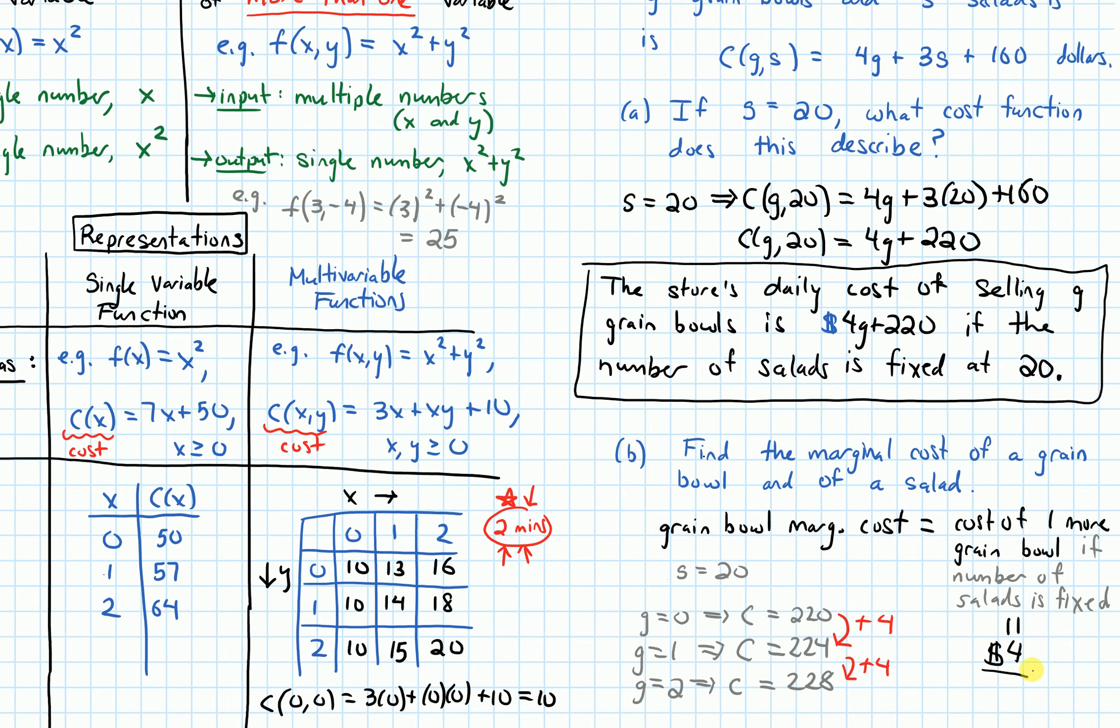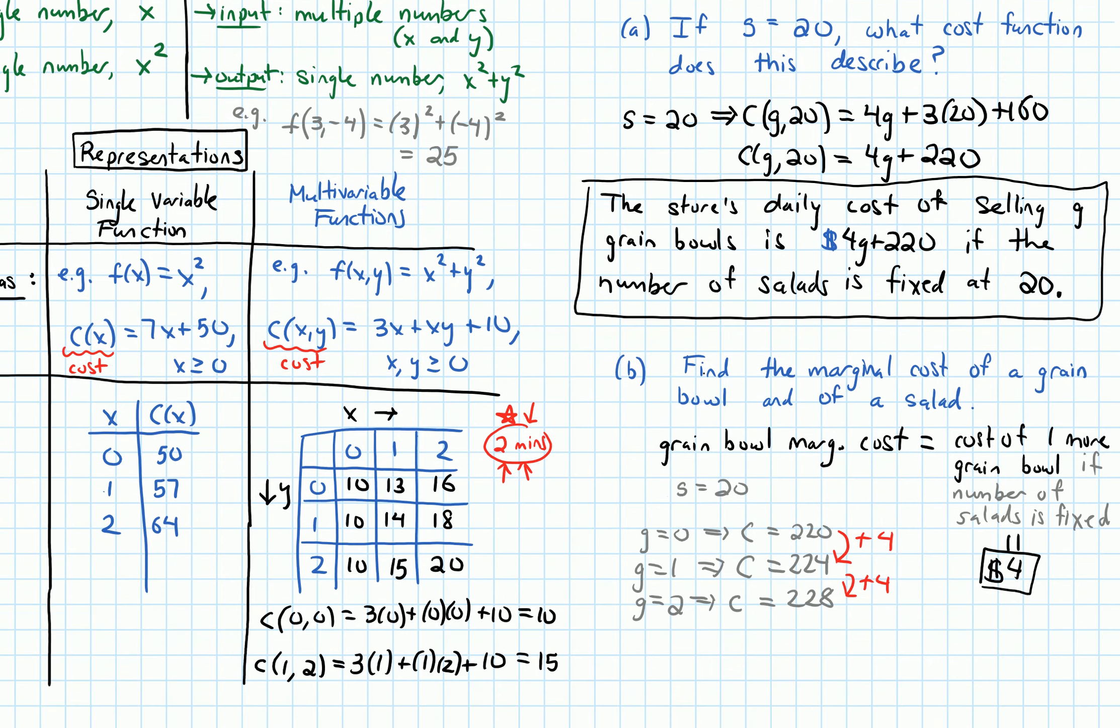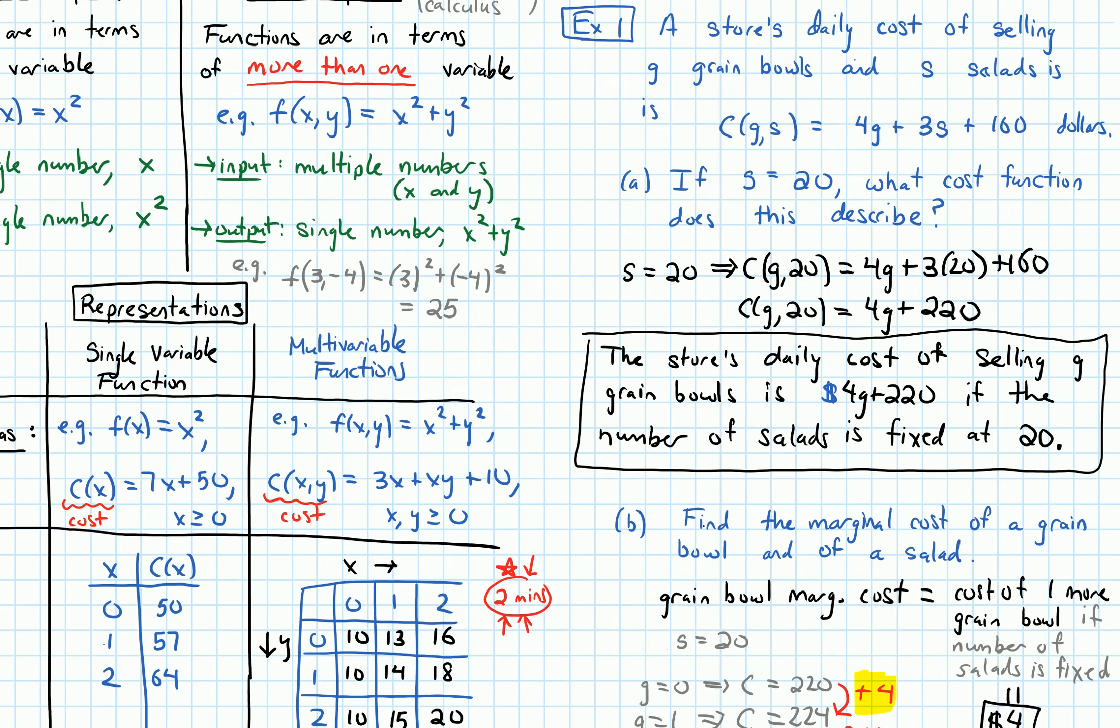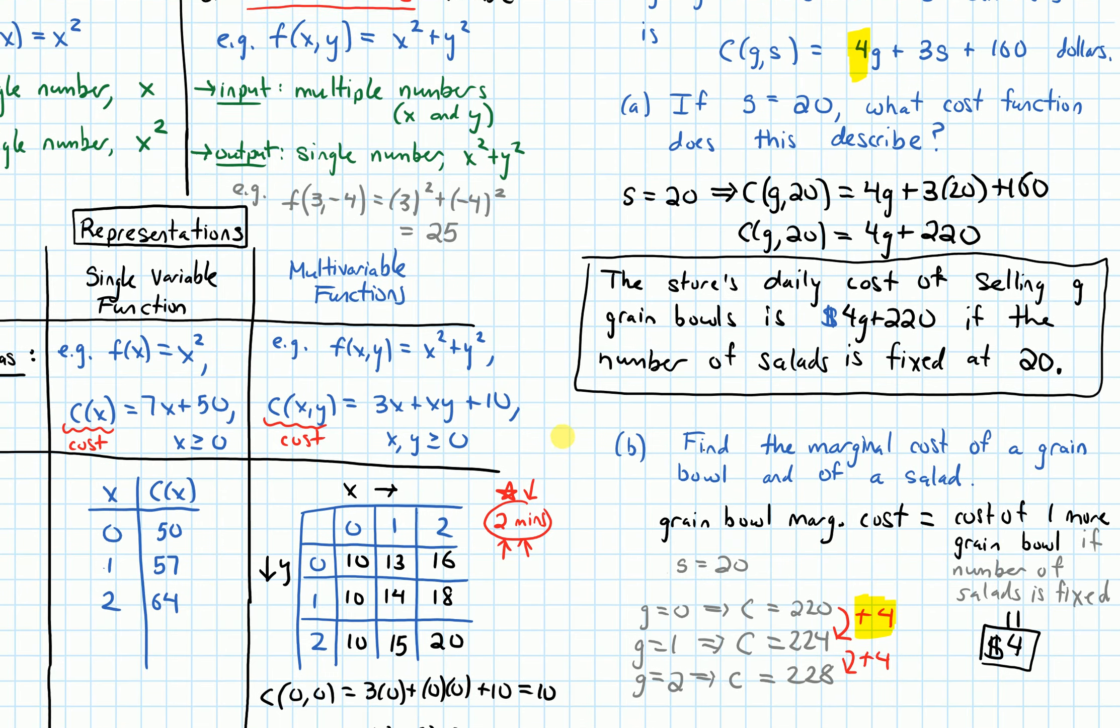So the marginal cost for grain bowls is equal to $4. It is not changing, no matter what value of S is plugged in, and what value of G is plugged in, as long as I'm just increasing G by 1. Okay, and we might notice that this increase, this $4 increase, was the coefficient of G in the original cost function. And that's not a coincidence. I'll come back to that later.